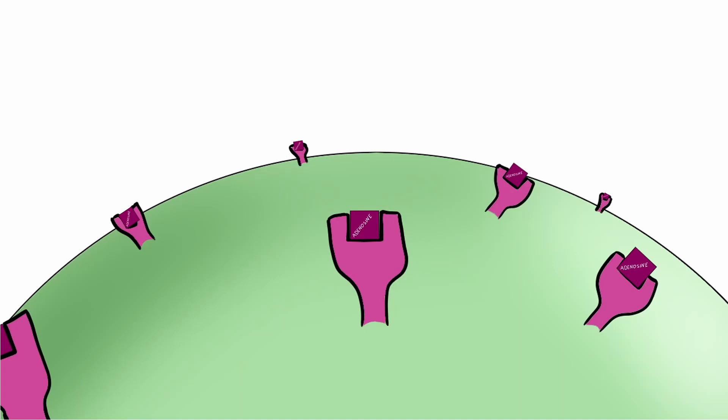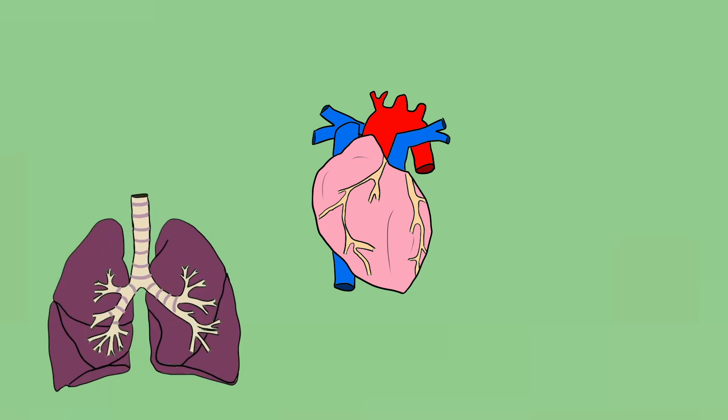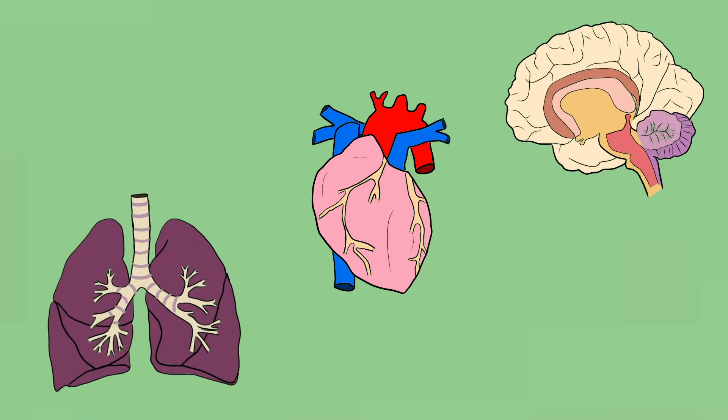Adenosine causes sleepiness through binding receptors on cells all over your body, which has a range of physiological outcomes. These include relaxing your myocardium, or heart muscle, narrowing your airways, and also inhibiting neurons from firing in your brain.